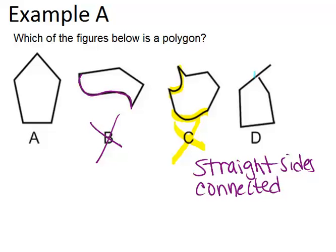D has this gap right here, or two sides that are not connected, so it also is not a polygon. That makes our answer choice A, which is a pentagon. It has five straight sides that are all connected.